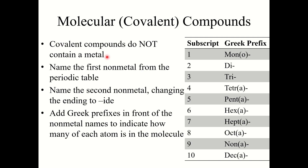You start by naming the first nonmetal from the periodic table, then you name the second nonmetal changing the ending to -ide. Now the difference with covalent compounds is you may need to add Greek prefixes in front of the nonmetal names to indicate how many of each atom is in the molecule.